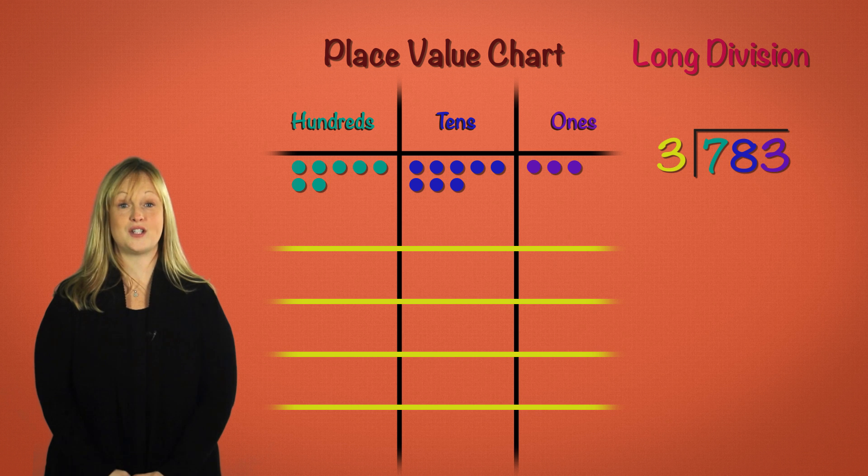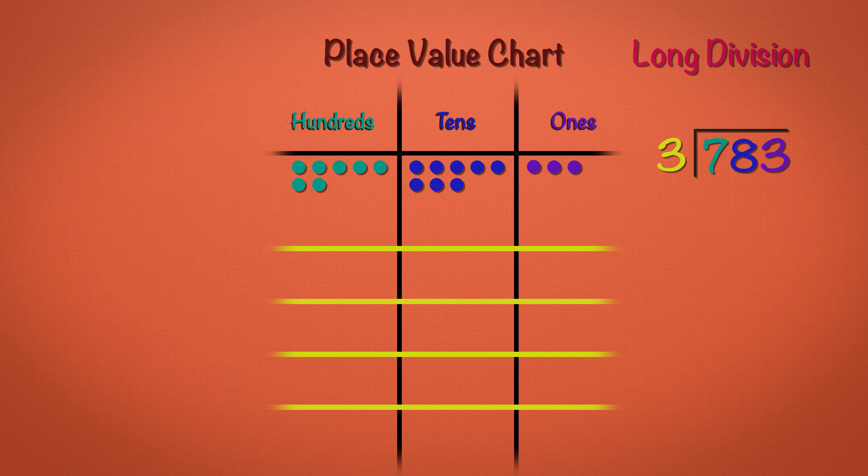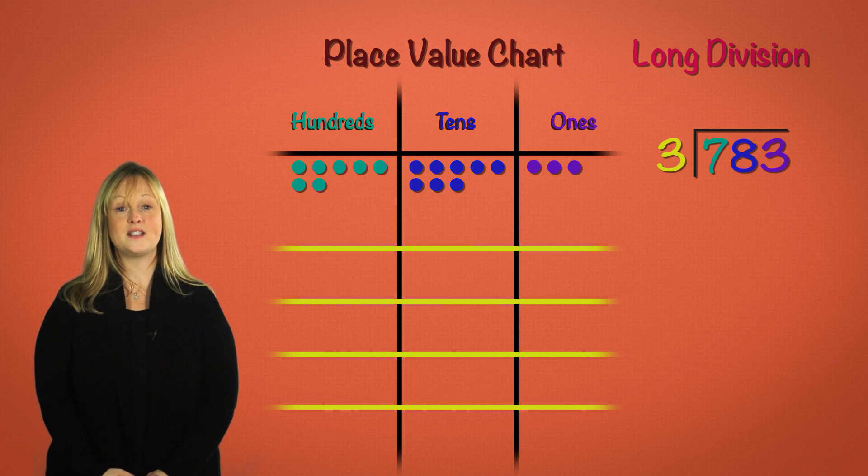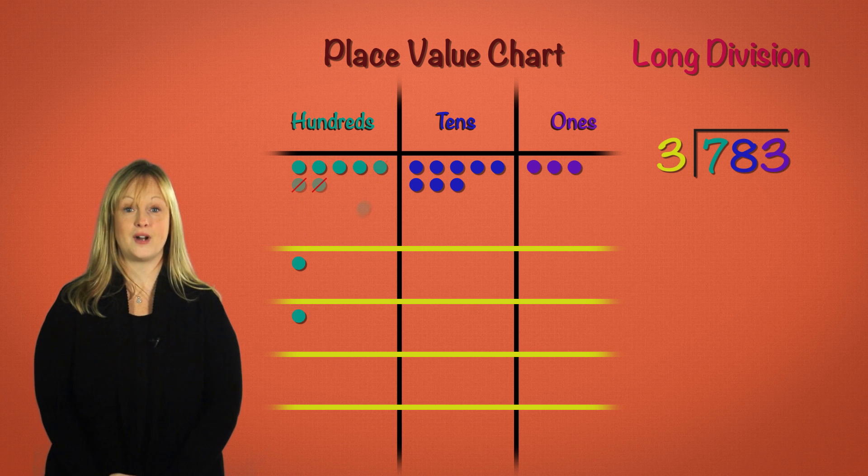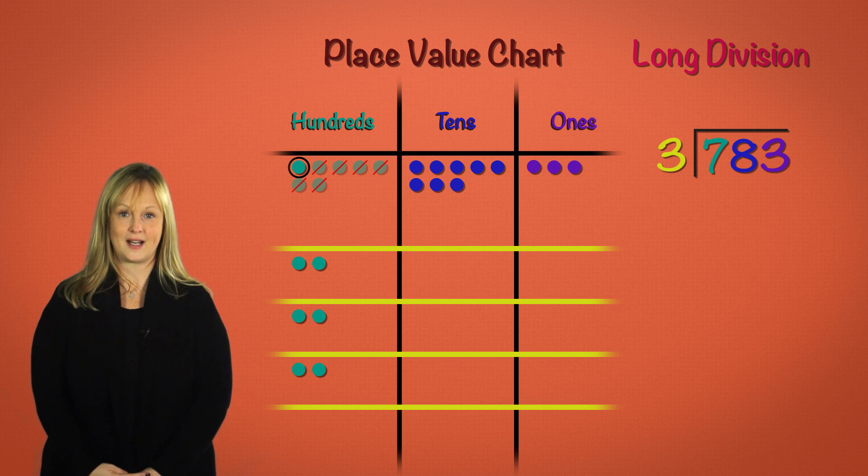Let's start with the largest unit. What should we be dividing first? We have 7 hundreds discs here, so we'll be dividing 7 hundreds by 3. That's 1, 2, and 3. We still have more, so we'll keep going. 1, 2, 3. We divided 7 hundreds by 3 and got 2 hundreds as our quotient with one disc remaining.